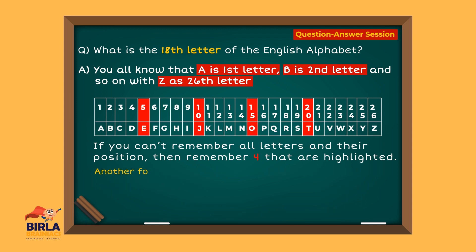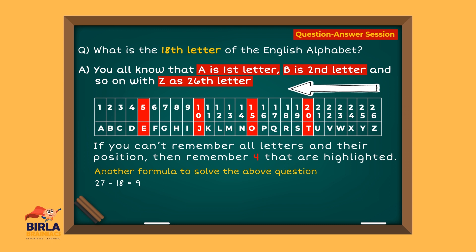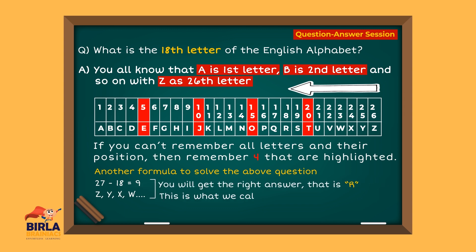Another way to find the answer is to use the formula 27 minus 18, which is 9. So if you count the 9th alphabet from the right side — Z, Y, X, W, etc. — you will get the right answer. This is what we call analyzing.